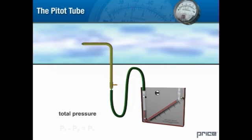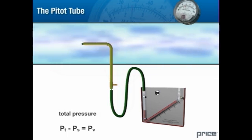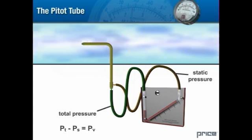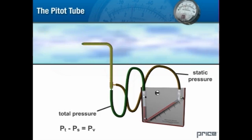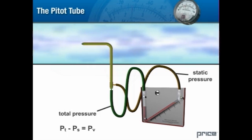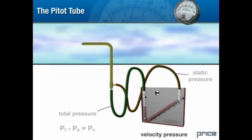As you no doubt recall, the static pressure must be subtracted from the total pressure to determine the velocity pressure. By connecting the static pressure to the low pressure side of the manometer, we counter the effect of the total pressure with the static pressure — in effect, we are subtracting the static pressure from the total pressure using this configuration. The resulting measurement on the inclined manometer is the velocity pressure of the air stream.